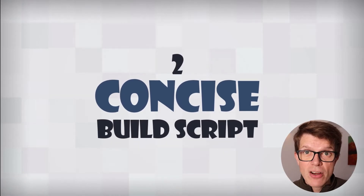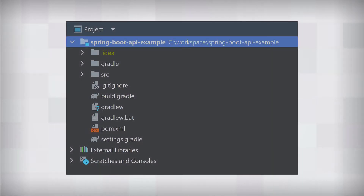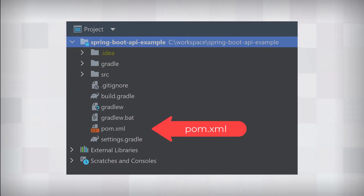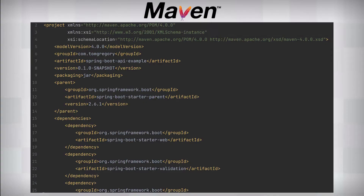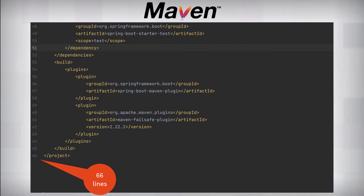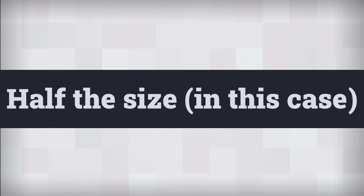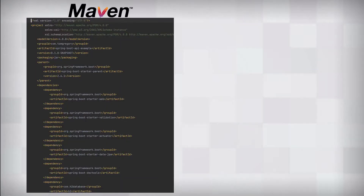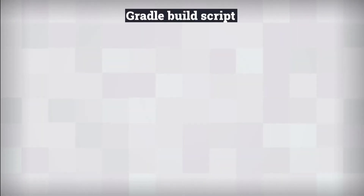Defining how to build your project in Gradle is much more concise than Maven. For a simple single-module Java project, Maven's XML build file comes in at 66 lines, whereas Gradle's Groovy build script is only 36 lines — about half the size. Maven is just a lot more wordy than Gradle, and there's no other reason for this than XML.